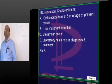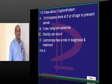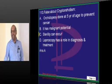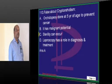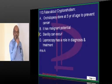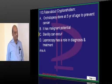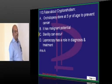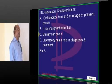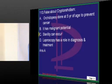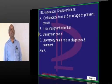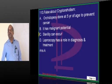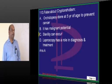In cryptorchidism, the ideal is to do orchidopexy as early as possible, before the second year of life, but not at five years. Orchidopexy does not prevent malignancy — because the testis lived in an abnormal location for a long period, it is predisposed to develop a seminoma.